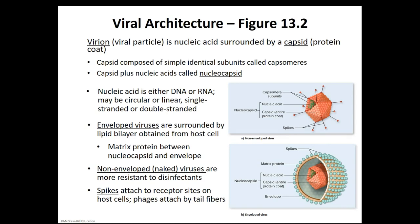A complete viral particle is known as a virion. That consists of the genetic information of the virus surrounded by its protein coat — the capsid. The capsid is composed of multiple subunits, and each individual subunit is referred to as a capsomer. If you combine the capsid and the nucleic acid, the genetic information of that virus, it's referred to as a nucleocapsid. A virus can contain DNA or RNA but never both, and it can occur in multiple forms: single-stranded, double-stranded, linear, or circular.